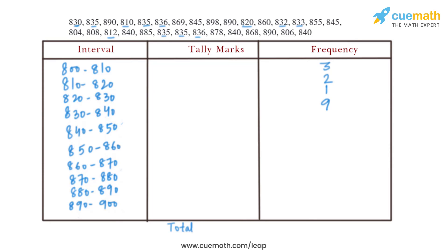Between 840 and 850, counting the values: 845 appears, and again 845, giving 2, then 3, 4, and 5 — so there are 5 values. Between 850 and 860, there is only one value: 855. Between 860 and 870, there are three values: 869, 860, and 868.